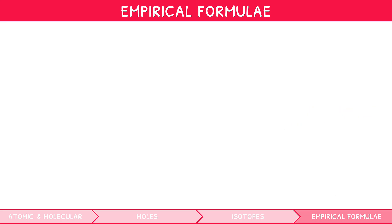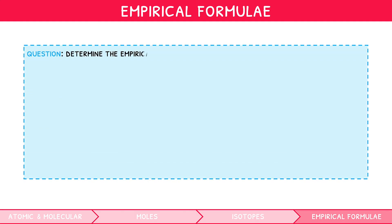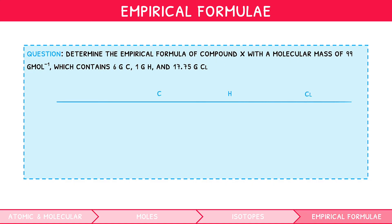For the IB chemistry exam, you need to be able to calculate the empirical formula of a compound from the mass of each element contained. This is best done in a table. For example, let's say we had a compound X with molecular mass of 99, which contains 6 grams of carbon, 1 gram of hydrogen, and 17.75 grams of chlorine. First, place each of the elements in its own column, and on the left side add a row for mass, mass divided by RAM, and final ratio.